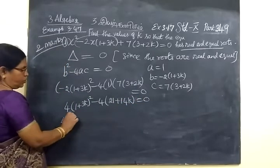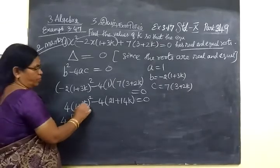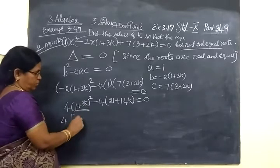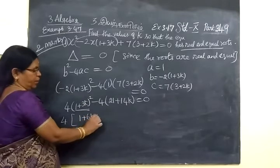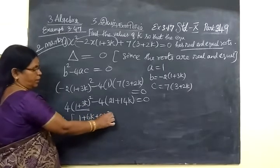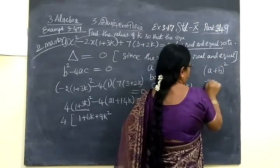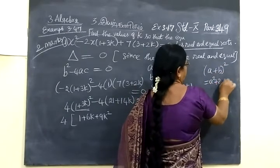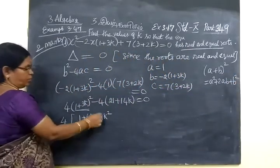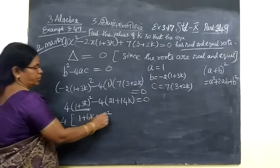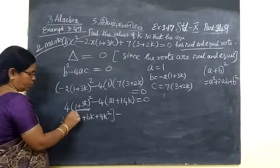Take 4 outside. Now, you write the identity. 1 plus 3K whole square: A² plus 2AB, 6K plus B², so 9K². You are using the identity A plus B whole square, A² plus 2AB plus B². So using this, you are making the expansion. Minus, take 4 outside equal to 0.